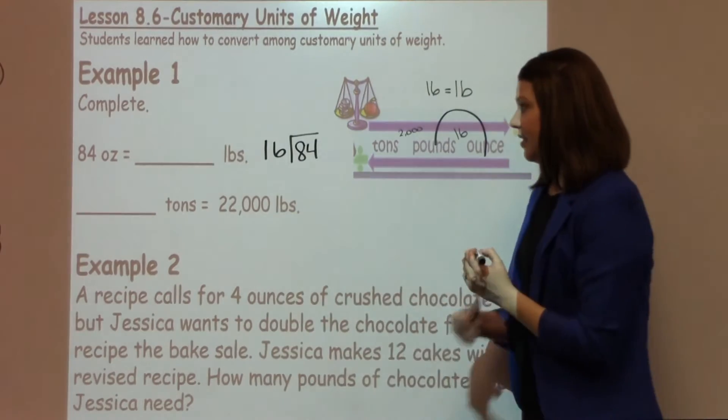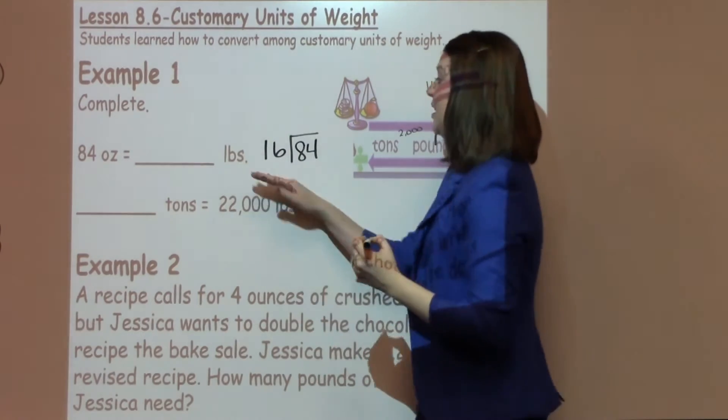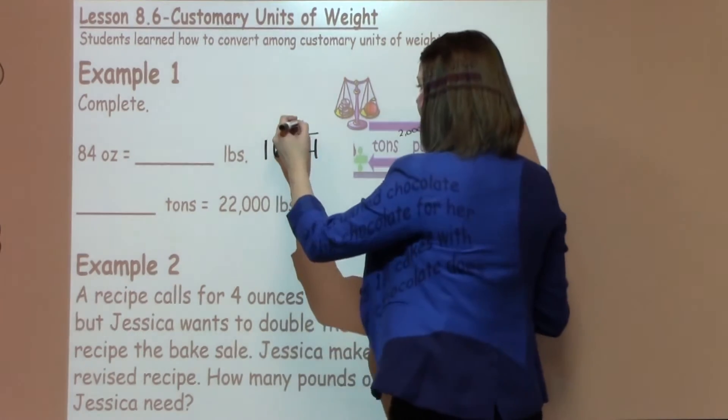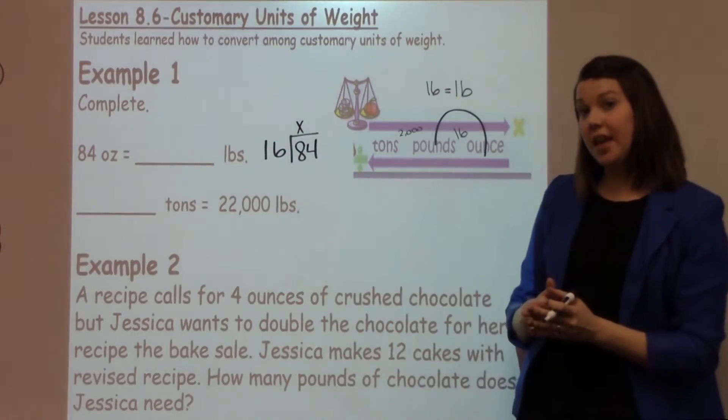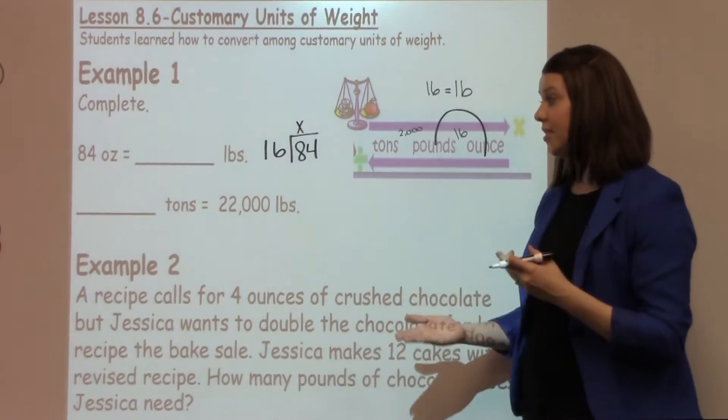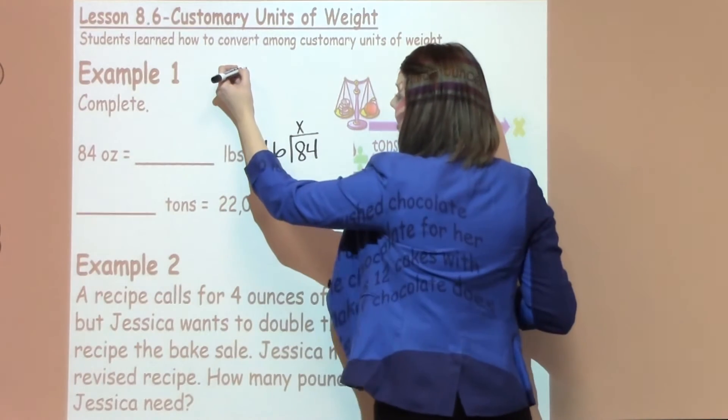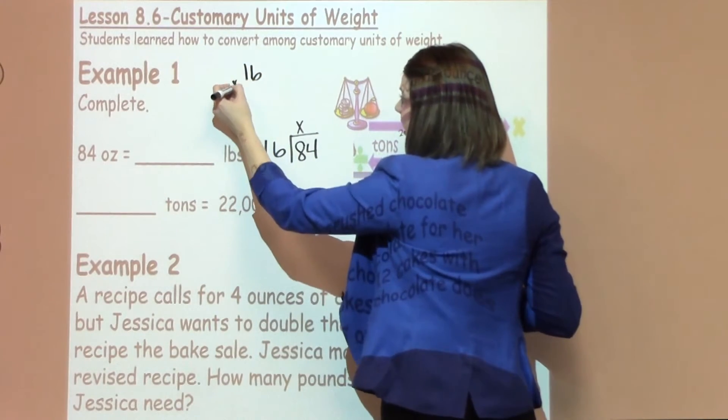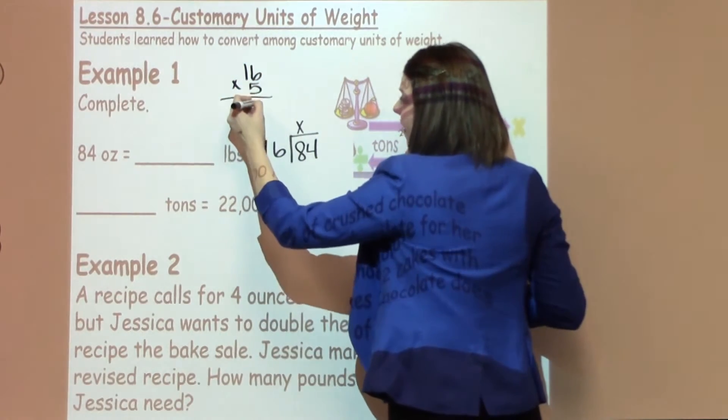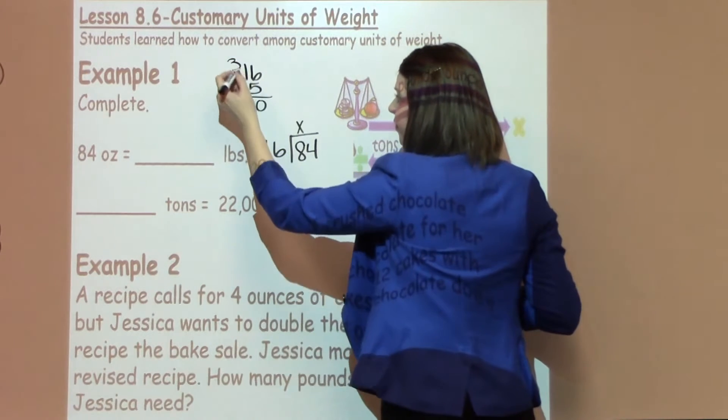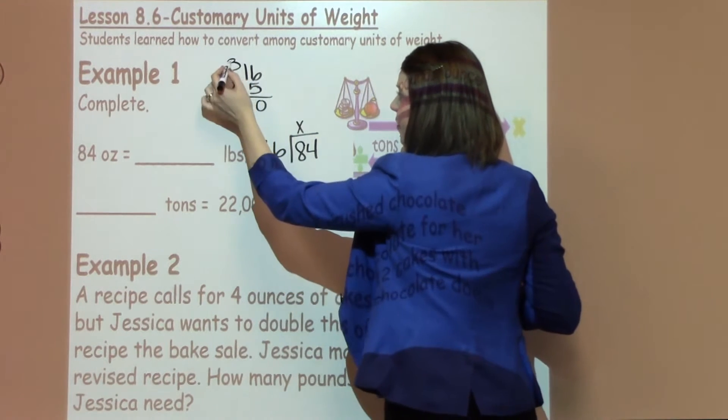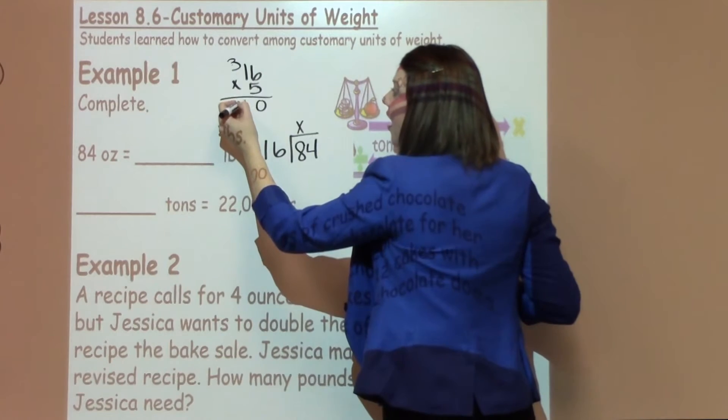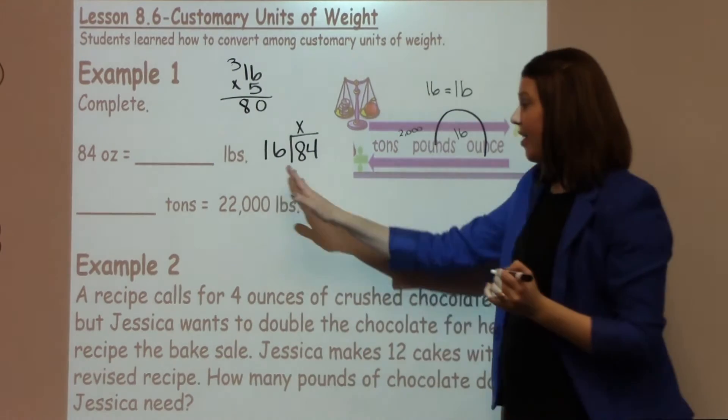Now when I look at this, can 16 go into 8? No, it cannot. Can 16 go into 84? I know it can, but I'm not sure how many times. I need to use guess and check. I always think a good spot to start with guess and check is 5. 6 times 5 is 30. 5 times 1 is 5 plus 3 more is 8. So I can see that I'm right there at 84.